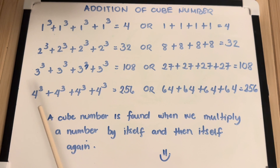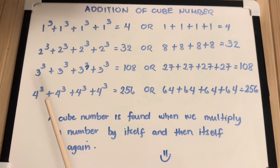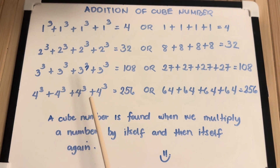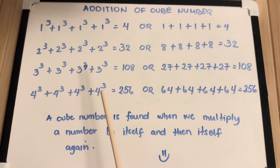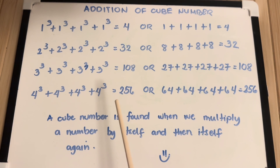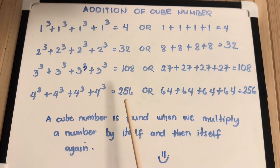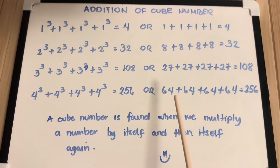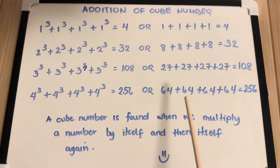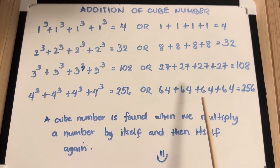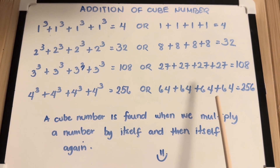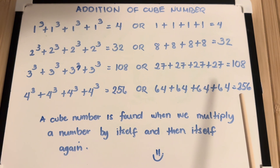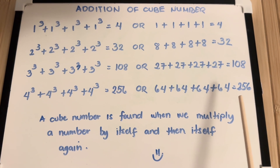4 cube plus 4 cube plus 4 cube plus 4 cube is equals to 256. Or 64 plus 64 plus 64 plus 64 is equals to 256.